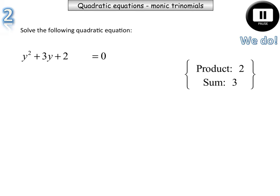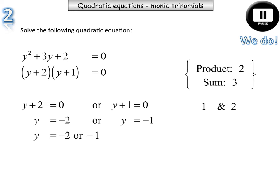We need two numbers that multiply to get 2 and add to give positive 3. Make sure that both of these are positive in your mind. Those two numbers will be positive 1 and positive 2. Put those into the brackets. We end up getting y + 2 = 0, or y + 1 = 0. This over to the other side becomes -2. This becomes -1. So we end up getting y = -2 or -1.